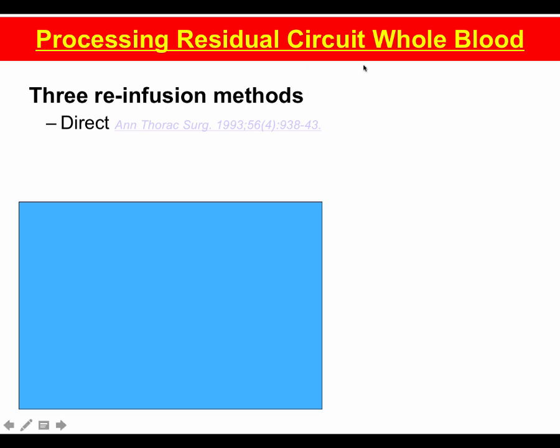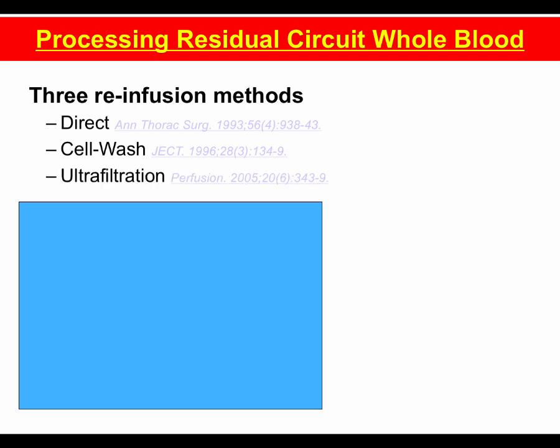The second method is to use a cell saver or cell washing device — take that residual circuit content, pump it into a cell saver cardiotomy reservoir, and wash that volume with saline, packing the circuit contents for subsequent reinfusion. The third method is taking that volume in the circuit, running it through a hemoconcentrator, removing the free water, concentrating the red cells, and giving that component back to the patient.